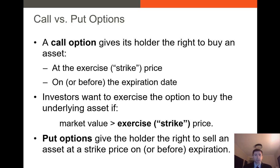So what types of options exist? There are two broad types of options. We have what are called call options and we have put options. A call option gives its holder the right to buy an asset at an agreed-upon strike price, also known as an exercise price, on or before the expiration date. If you're an investor who buys a call option, you'd want to exercise it if the market value of the underlying asset is greater than the strike price. The put option works the exact opposite — it gives you the right to sell an asset at the strike price on or before expiration.